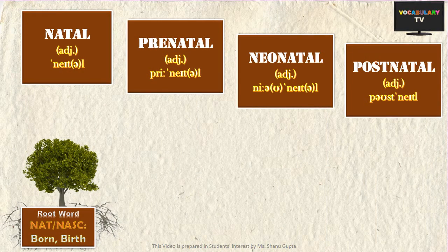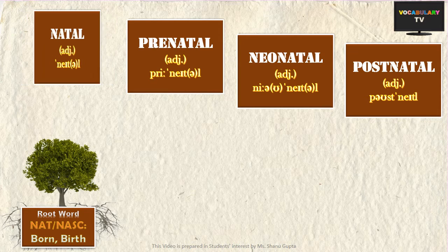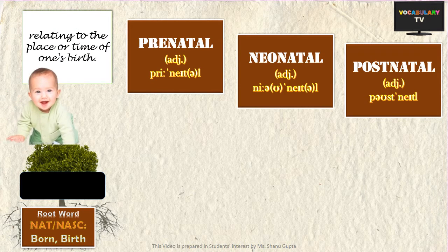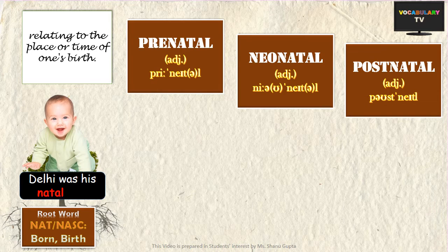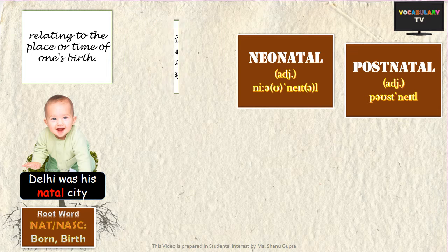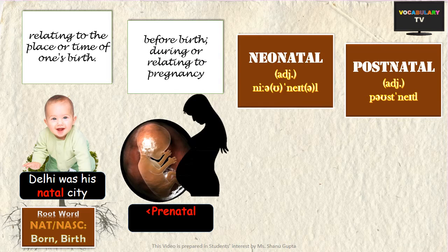The easiest of the words to grasp from this root is 'natal.' Natal is an adjective that describes the place or time of someone's birth — like someone's natal household could be in Delhi. By extension, 'prenatal' is something that relates to the time of pregnancy or before birth, like one might observe the prenatal development of a child through an ultrasound scan.